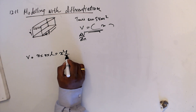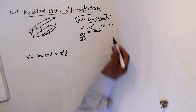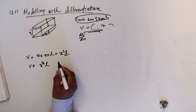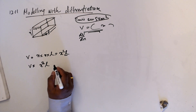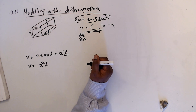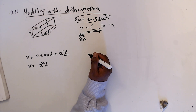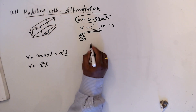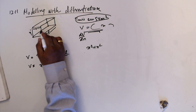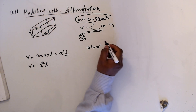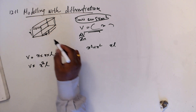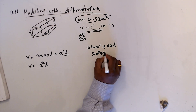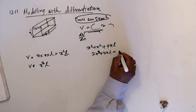First, write the equation for the volume of the cuboid: V = x × x × l = x²l, where l is the length. We want to eliminate l. Using the total area information: the two square ends give 2x², and the four rectangular sides give 4xl, so the total area equation is 2x² + 4xl = 54.